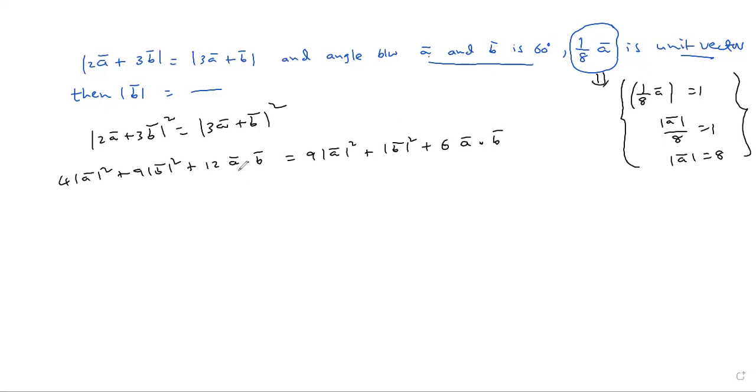Angle between A and B is 60. Here A dot B expand. First, I am taking this. You can write all on one side.